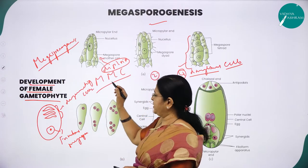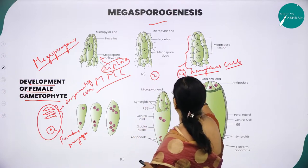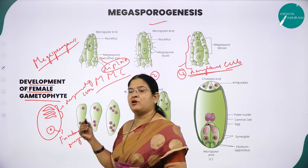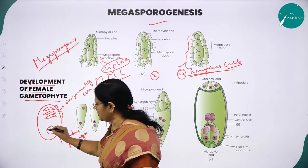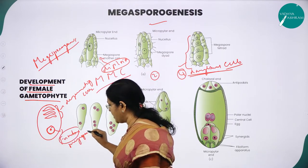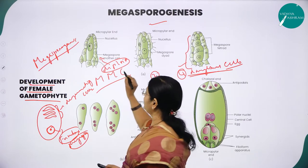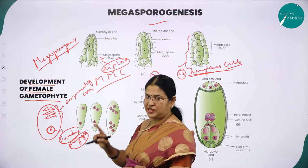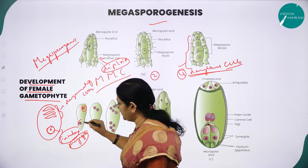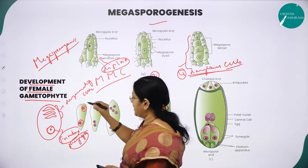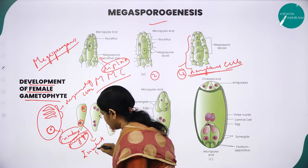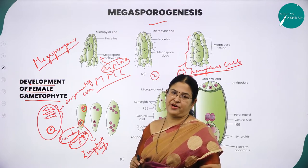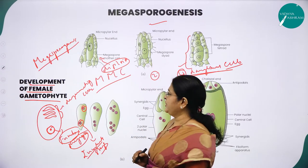The diploid MMC undergoes meiotic division to form four daughter cells. Among the four, three degenerate and only one is functional. This functional megaspore undergoes the first mitotic division to produce two nuclei, which move to opposite poles — this stage is called the two-nucleate stage. This megasporogenesis topic is very important from the examination point of view.